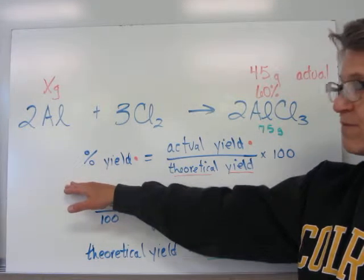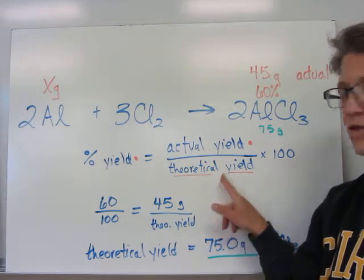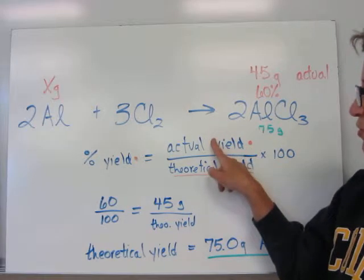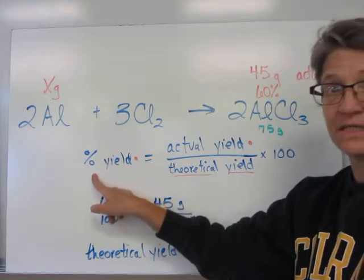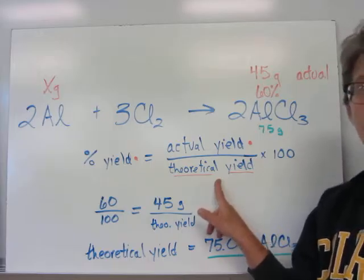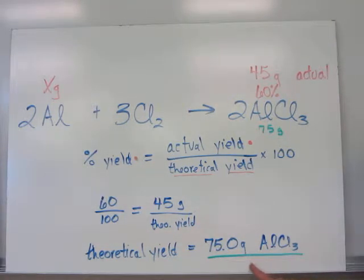If you remember your percent yield equation, actual yield divided by theoretical multiplied by 100. We have the actual yield, that's the 45 grams. We know the percent yield, that's 60 in this problem. Rearrange and solve for your theoretical yield. When I solve, my theoretical yield is 75 grams of aluminum chloride.